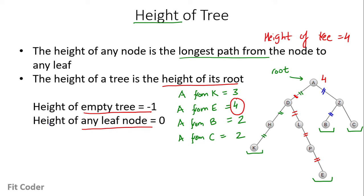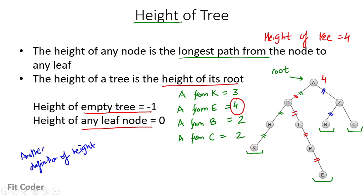In some books, you may find another definition of height where it is considered as the maximum number of nodes from the leaf node. For node A, the maximum number of nodes would be 5: A, D, L, P, E. In those books, the height of the empty tree is considered as 0. So there are two definitions of height.